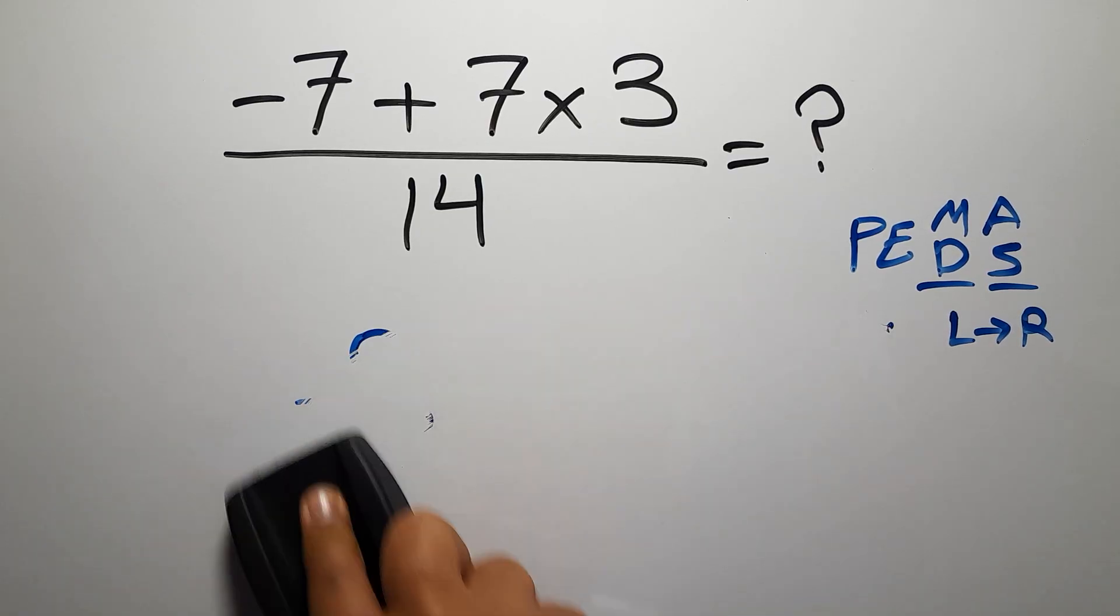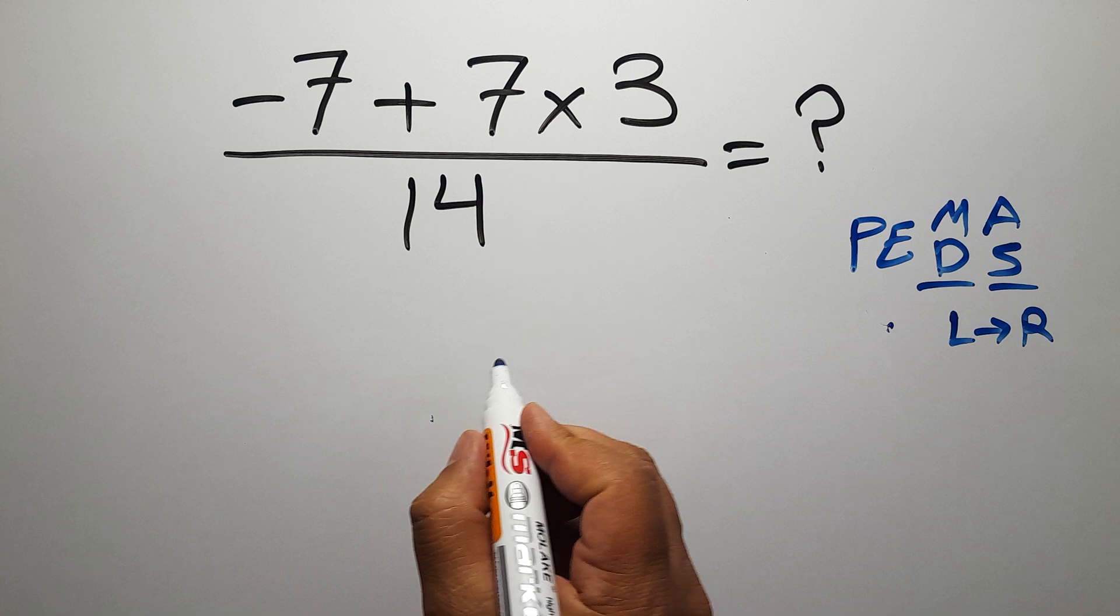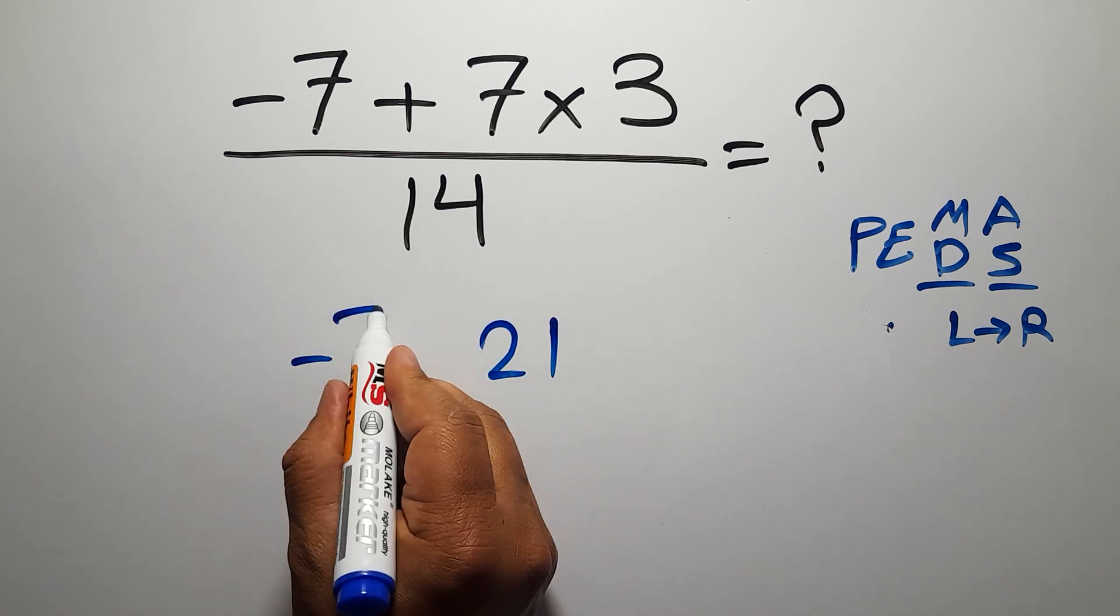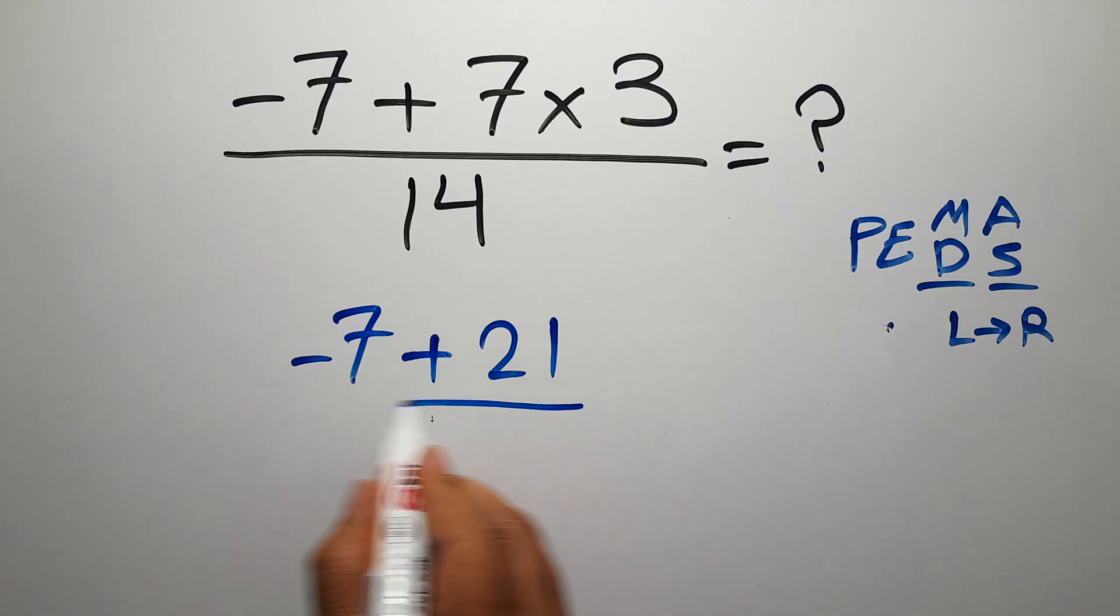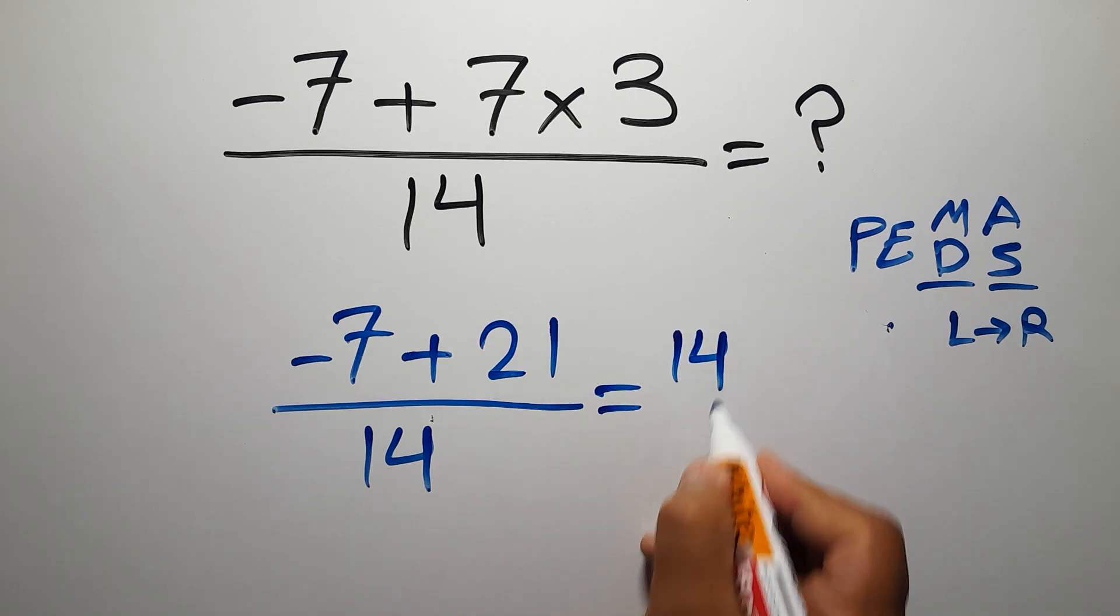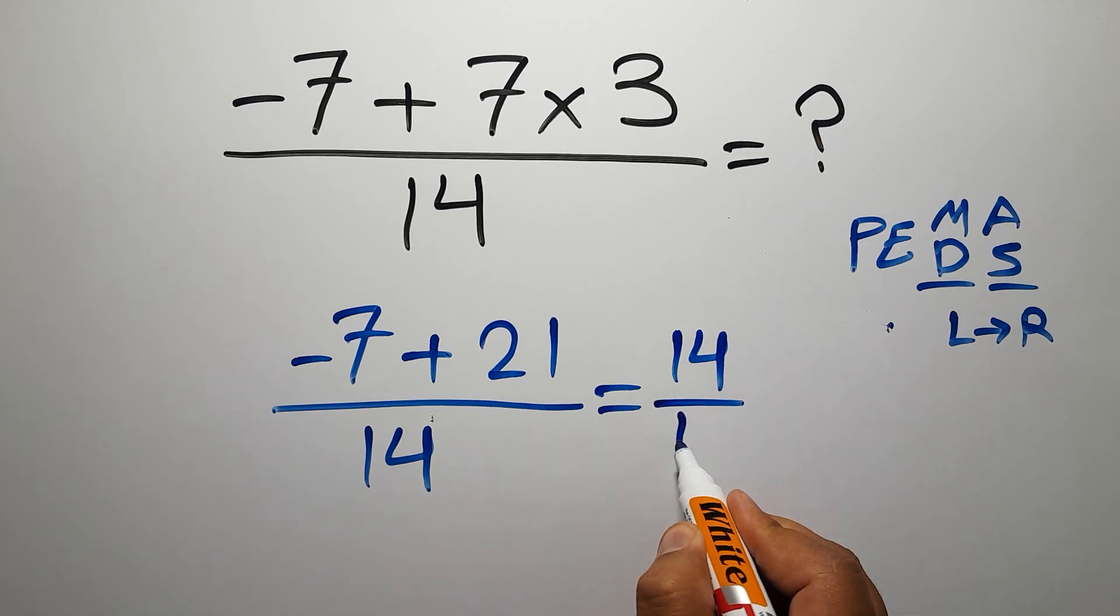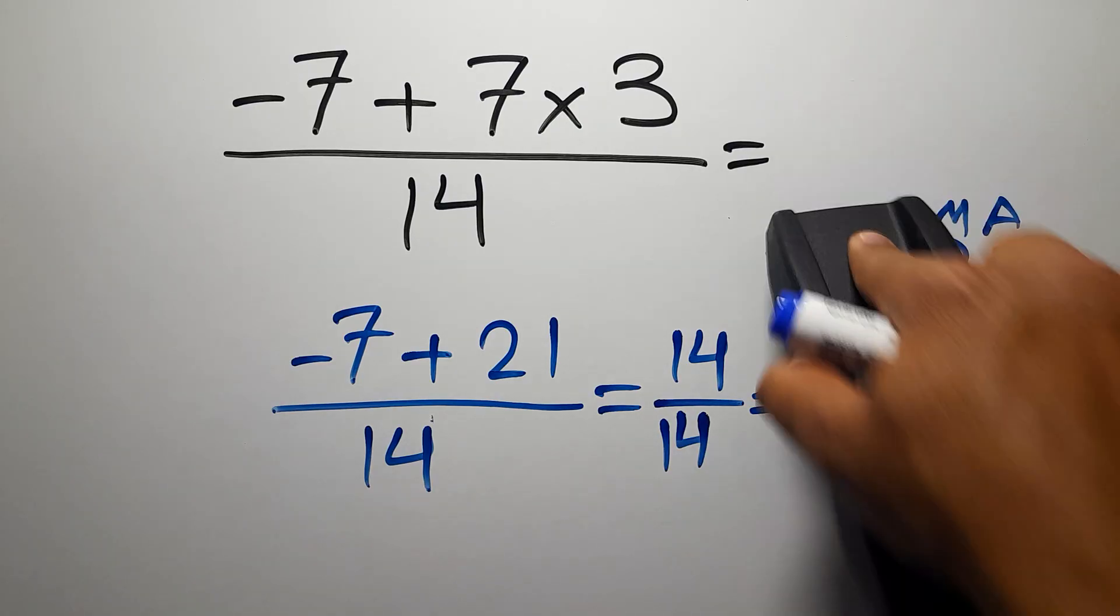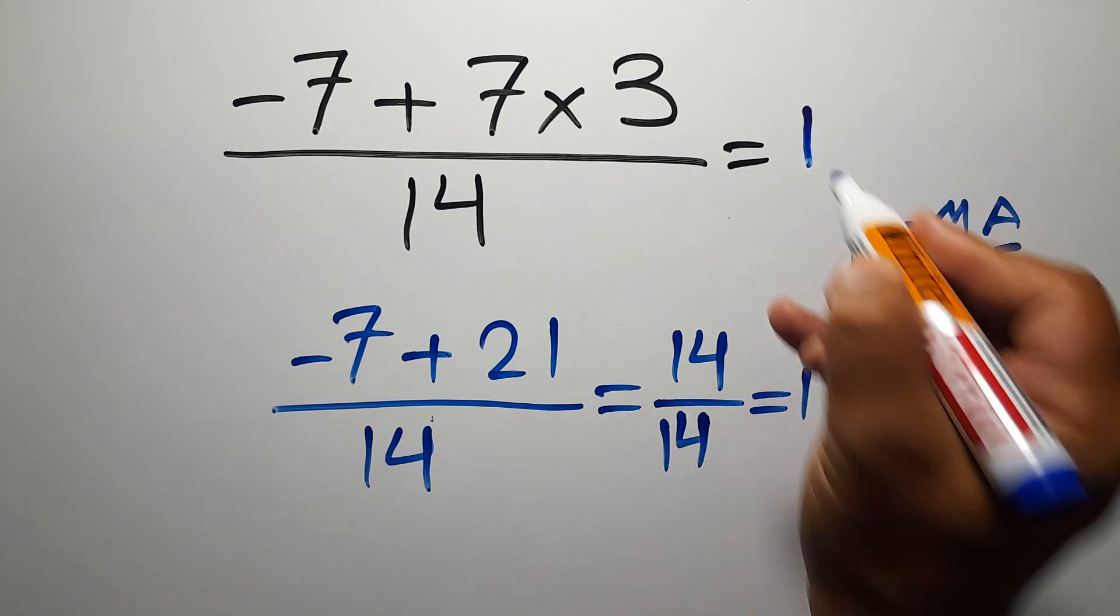So first 7 times 3, which equals 21. So we have negative 7 plus 21 over 14. Now negative 7 plus 21 equals 14, and 14 over 14, which equals 1. This is our final answer to this problem. The correct answer is 1.